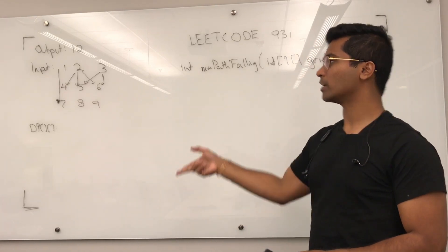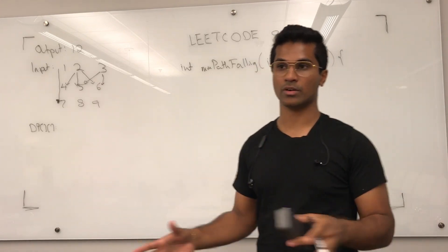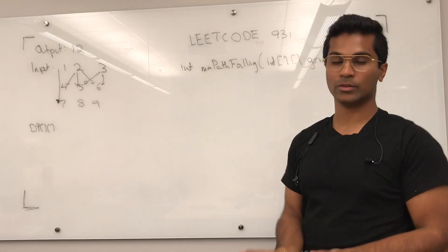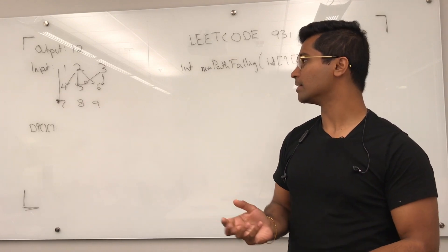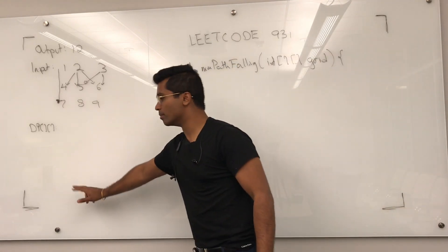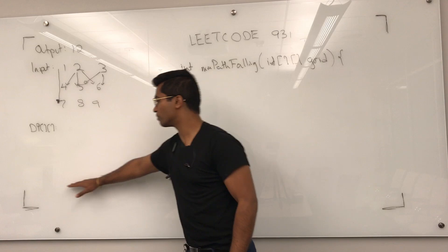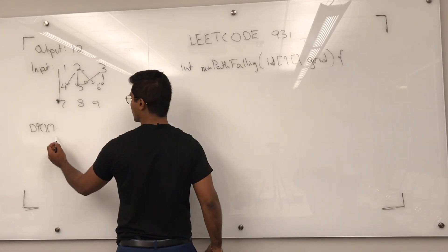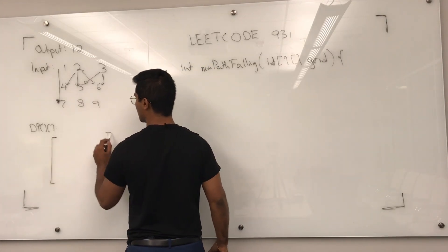Now, the way I solved this one was to use a 2D grid of DP. I'm going to populate my 2D grid and then at the end I'm going to return the minimum number in the last row of my DP array. So, this is also going to be a 2D grid.